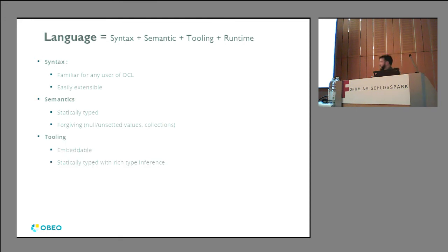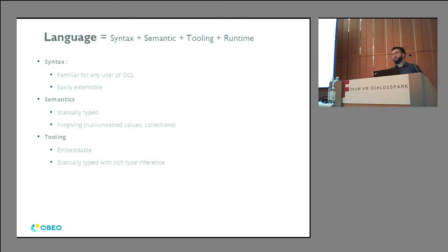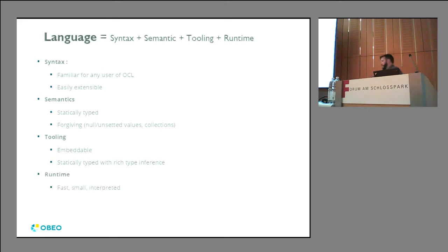From a tooling perspective, we really wanted something embeddable with a very low dependency footprint. Static typing is especially relevant when you embed a language into another one. We wanted rich type inference — a way to move back from verbose static typing to something very close to a dynamically typed language. And the runtime is most important: when you use a query language to refresh a diagram, you may have 100 or 1,000 queries executing before the user gets the new diagram, so you need it to be very fast.